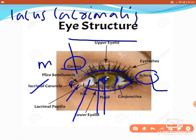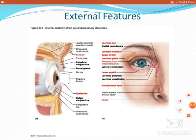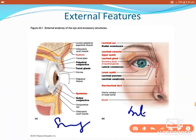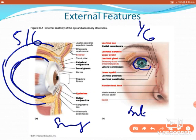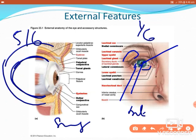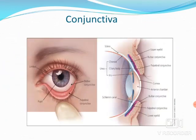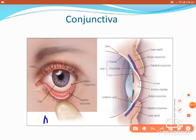The sclera and cornea form the outer fibrous layer of the eyeball. This first figure is the sagittal view, and this is the anterior view of the eyeball. Externally, only one-sixth of the eye is visible, and the remaining five-sixths are enclosed and protected in the bony canal that is the orbit. You can also identify the iris, pupil, and sclera here.